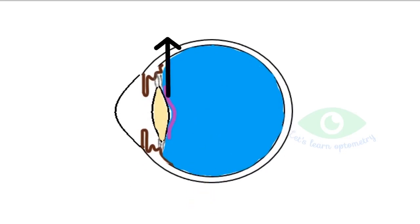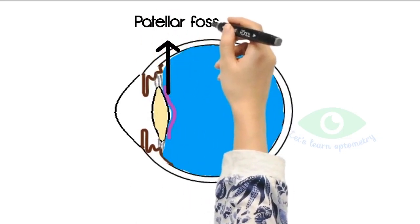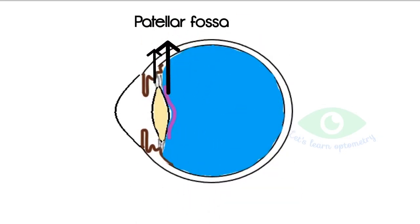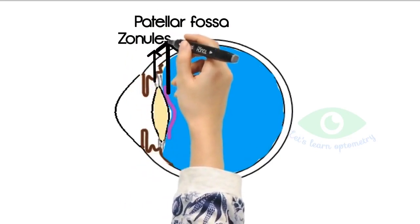The saucer-shaped depression is called the patellar fossa. The lens is suspended from the surrounding ciliary body by the zonular fibers.